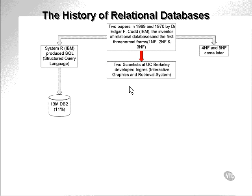Going back to the initial creation of relational databases, two scientists at the University of California, Berkeley developed a database which they called INGRESS. As you can see from the diagram, the acronym comes from Interactive Graphics and Retrieval System. They created the first commercial relational database, and some time after that, a company called INGRESS Corporation was created to market and sell the INGRESS relational database.